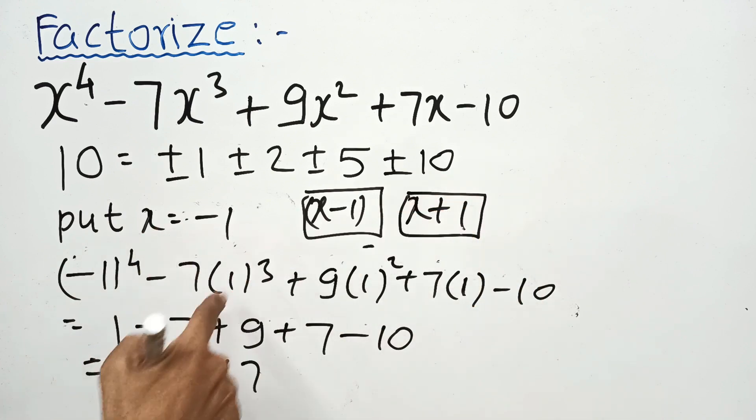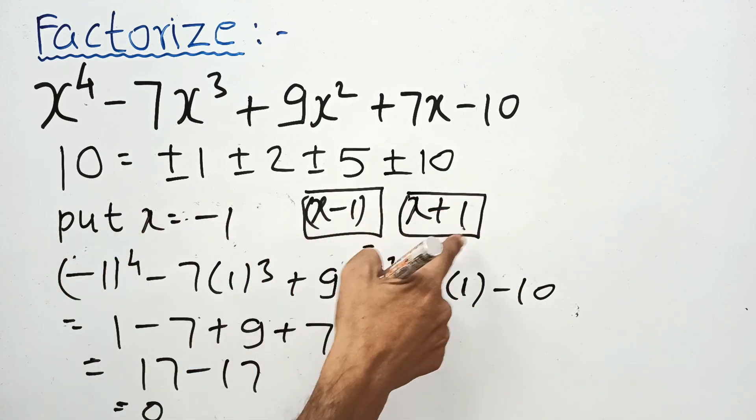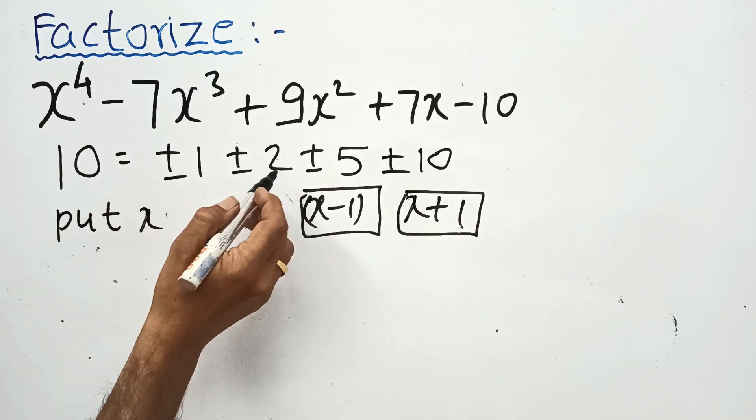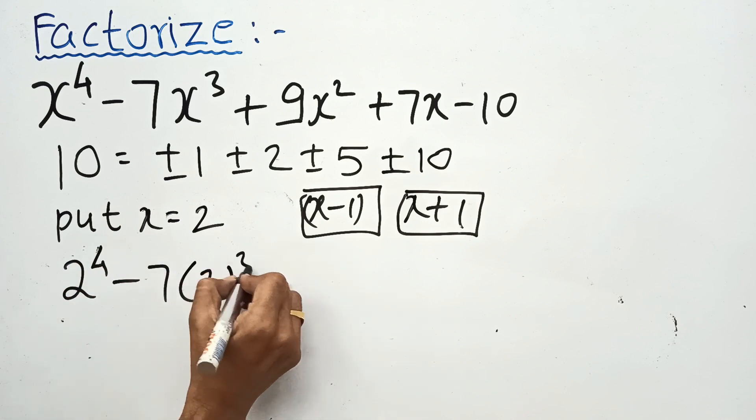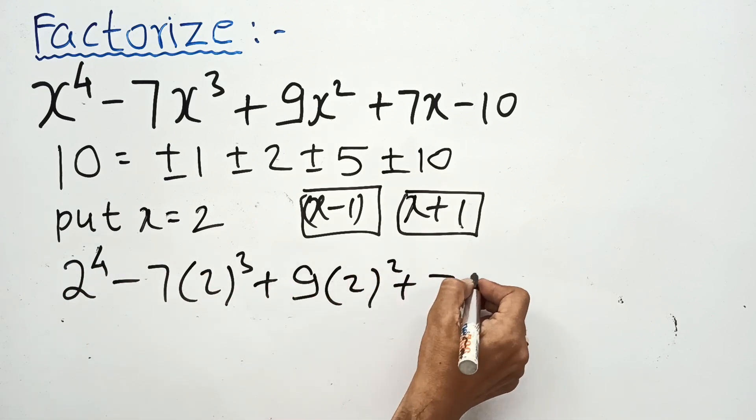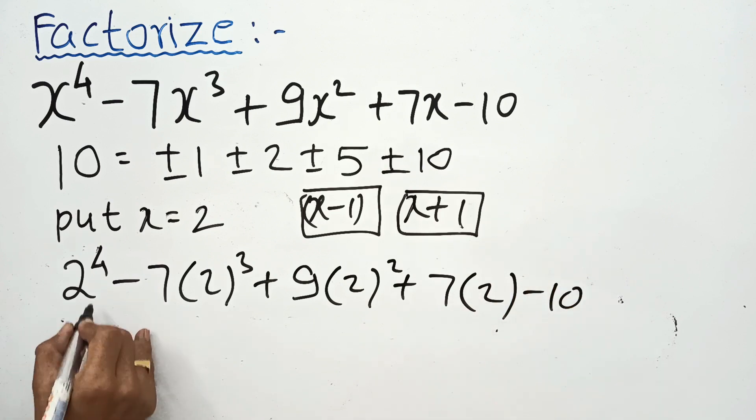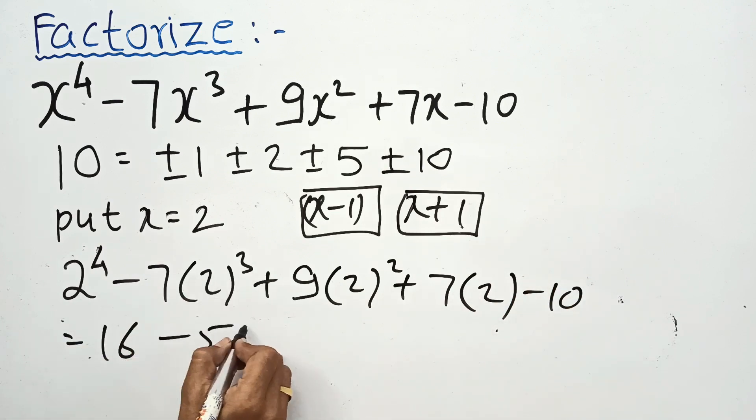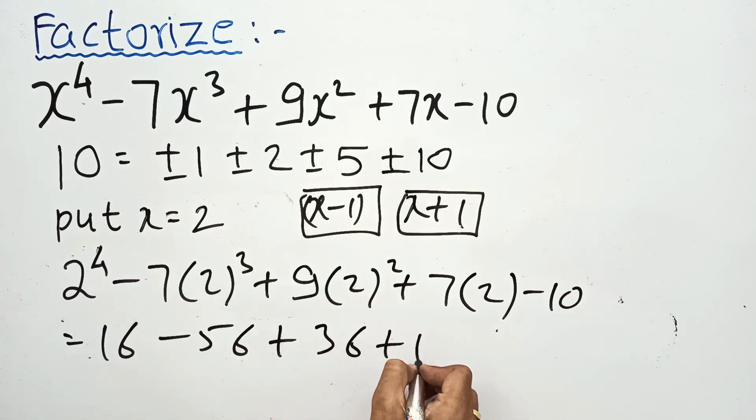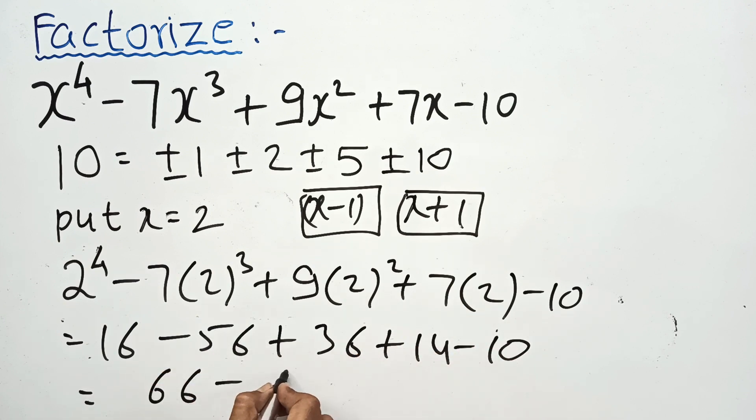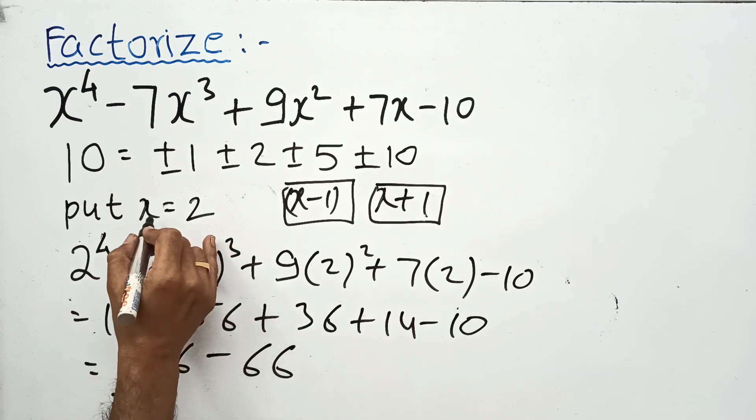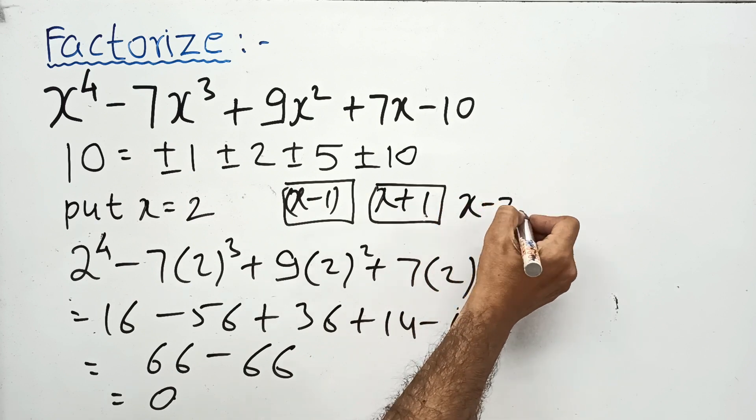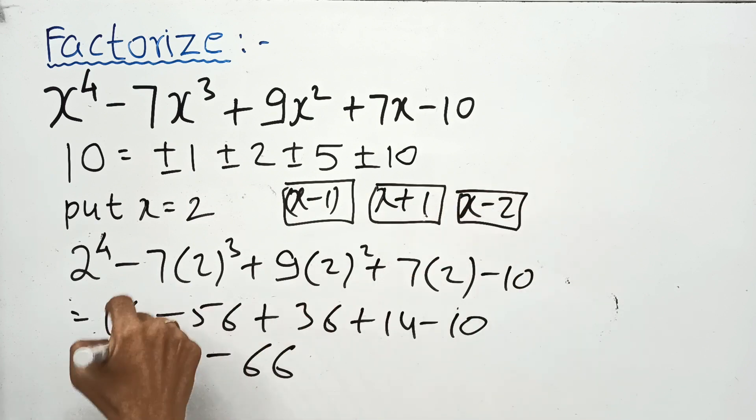Now let us check for 2. This gives 66 plus 66 minus minus 66 equals 0. Therefore, x minus 2 is another factor.